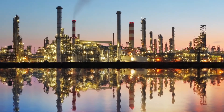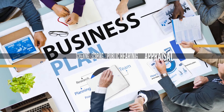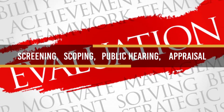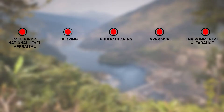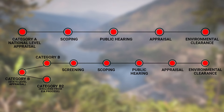After the 2006 Amendment, the EIA cycle comprises four stages: Screening, Scoping, Public Hearing, and Appraisal. Category A projects require mandatory environmental clearance and thus do not undergo the screening process. Category B projects undergo the screening process and are classified into two types: Category B1 projects, which mandatorily require environmental impact assessment, and Category B2 projects, which do not require environmental impact assessment. Thus, Category A and Category B1 projects undergo the complete EIA process, whereas Category B2 projects are excluded from the complete environmental impact assessment process.